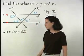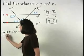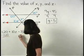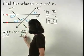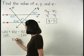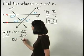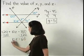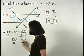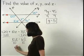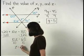Subtracting 120 from both sides gives us 10z equals 60. And dividing both sides by 10, we find that z equals 6.